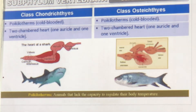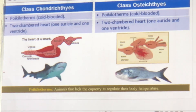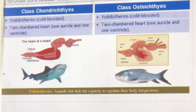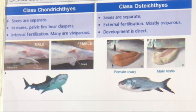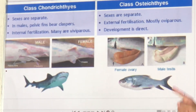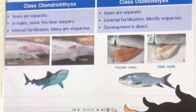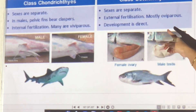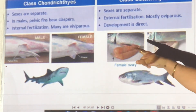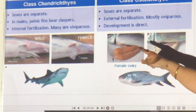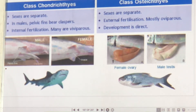Both Chondrichthyes and Osteichthyes are cold-blooded — that is the property of fish whether cartilaginous or bony. The sexes are separate. In Chondrichthyes males, the pelvic fin has a clasper to hold the female; fertilization is internal and they are viviparous — giving birth to live young. In Osteichthyes, fertilization is external and they are oviparous — laying eggs.